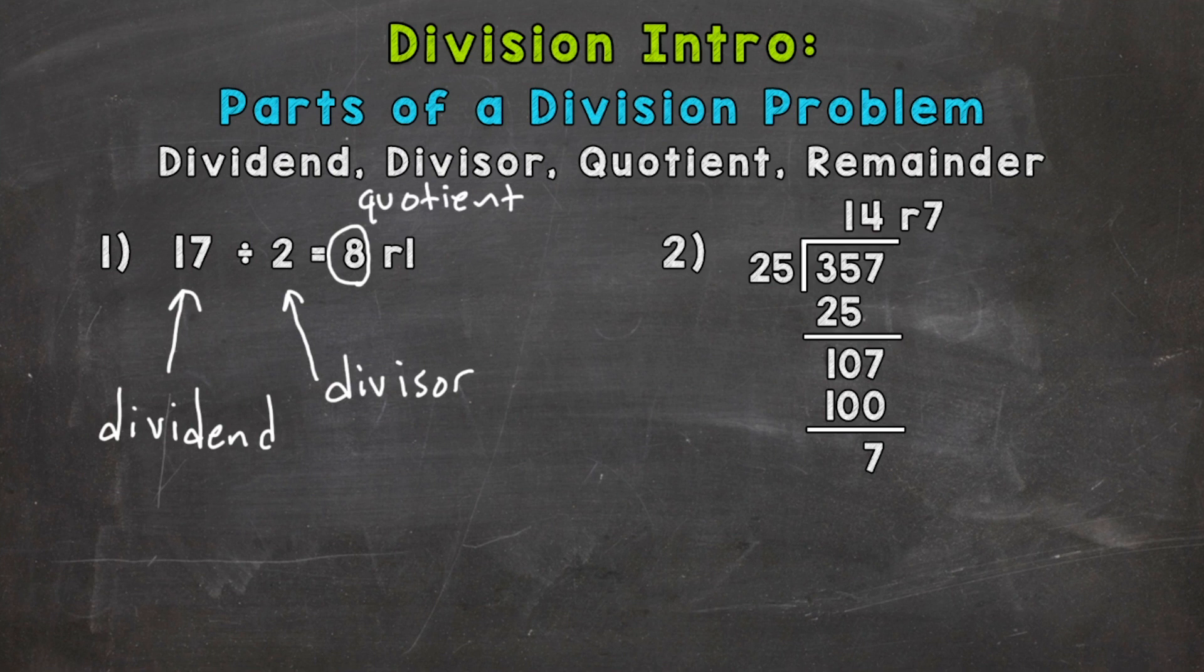Now when we divide 17 into two equal groups we have one left over. So this is our remainder.